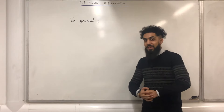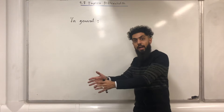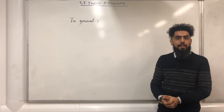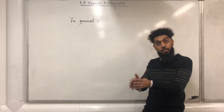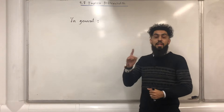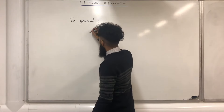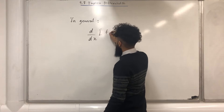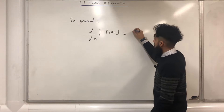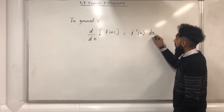Now we can make a conclusion. If you differentiate some function of y with respect to x, you differentiate that function of y as normal and then stick in dy over dx. In the same way, if you differentiate some function of t with respect to x, you differentiate it as normal and stick in dt over dx. In general, if you differentiate some function f of u with respect to x, you differentiate f of u as normal giving f dash of u, and then stick in du over dx.